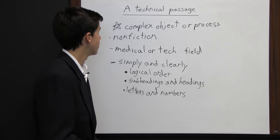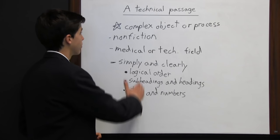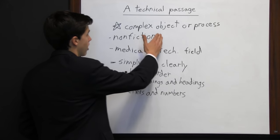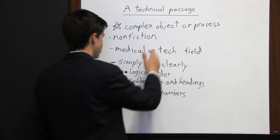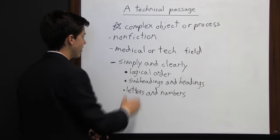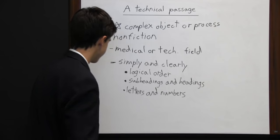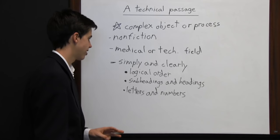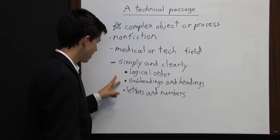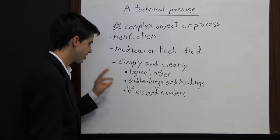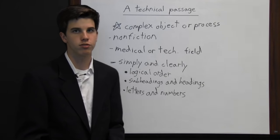To review: a technical passage is for the purpose of describing a complex object or process, and everything needs to be stated simply and clearly. The three tactics an author can use are logical order, subheadings and headings, and letters and numbers.